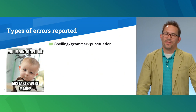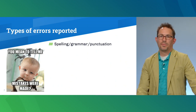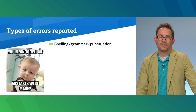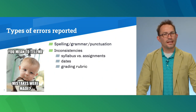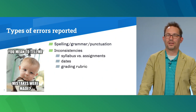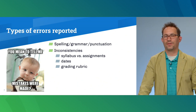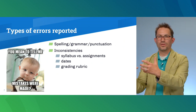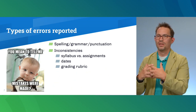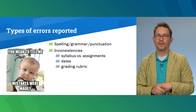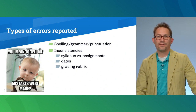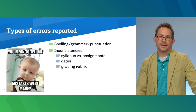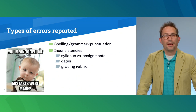What are some of the types of errors I get? The most common are spelling errors, grammar, and punctuation — misspellings or typos that are easily remedied. The second type, still easy to correct but potentially more impactful, are inconsistencies. So if my syllabus says one thing and the assignment instructions say something different, or due dates differ, or if dates haven't been transferred correctly when moving to a new semester — even grading rubrics can have inconsistencies.